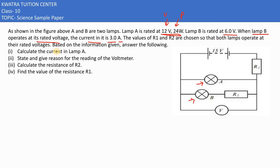3 ampere. And then they are saying the values of R1 and R2 are chosen so that both lamps operate at their rated voltage as they work on it. This is like the resistance. In the first part they are asking us to find the current in lamp A.